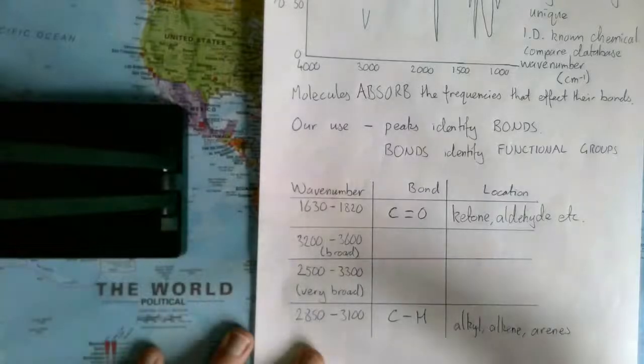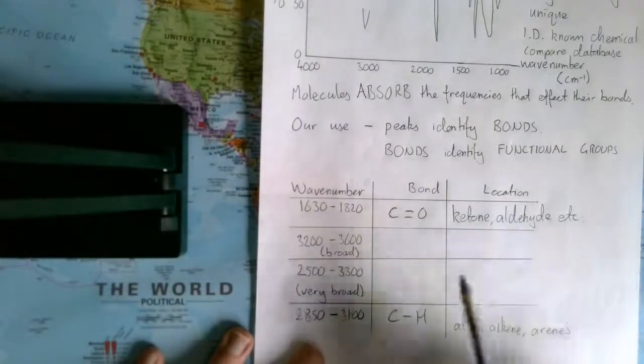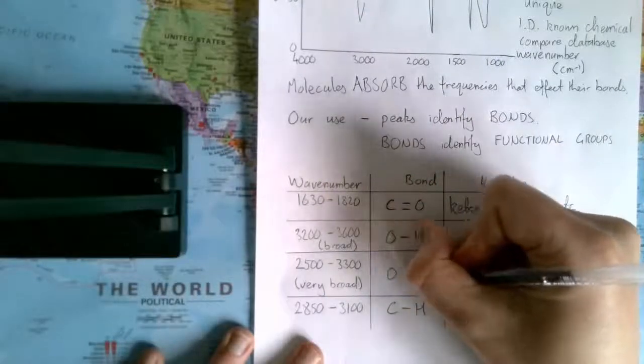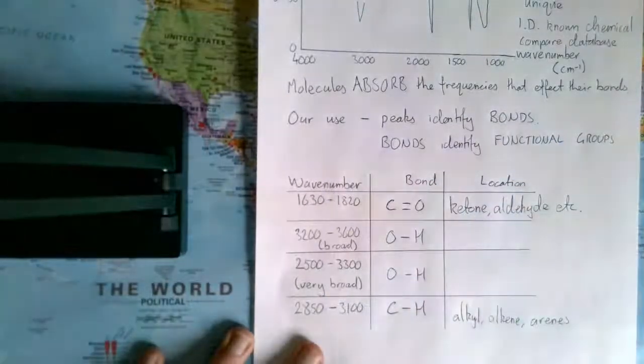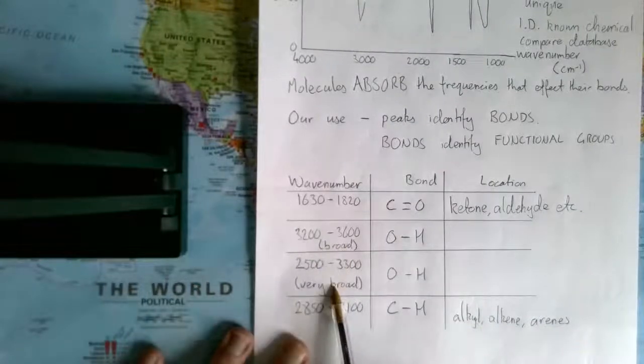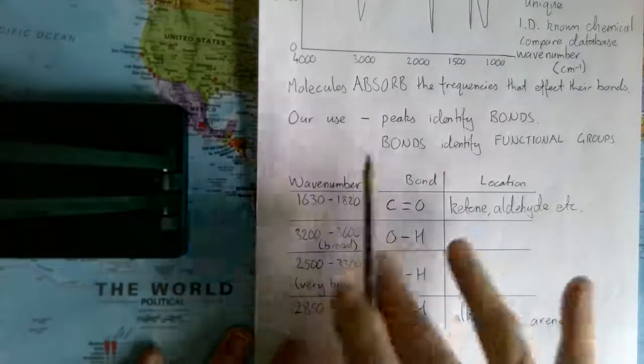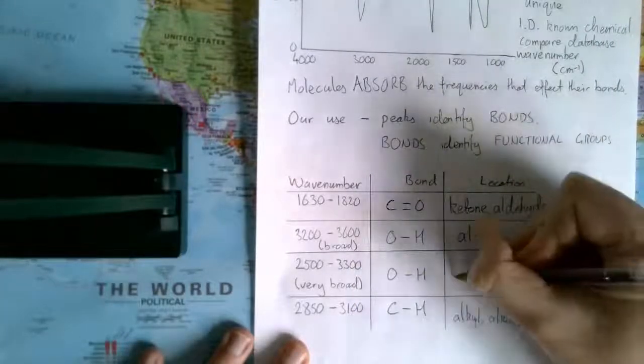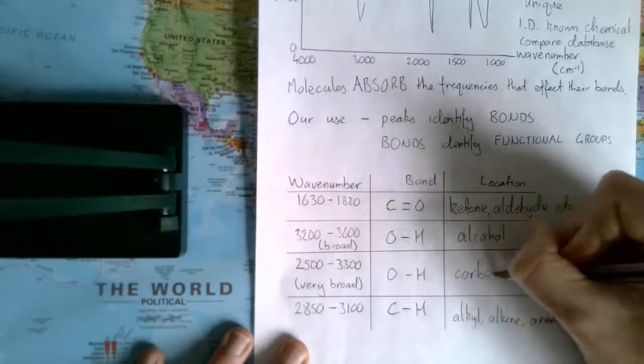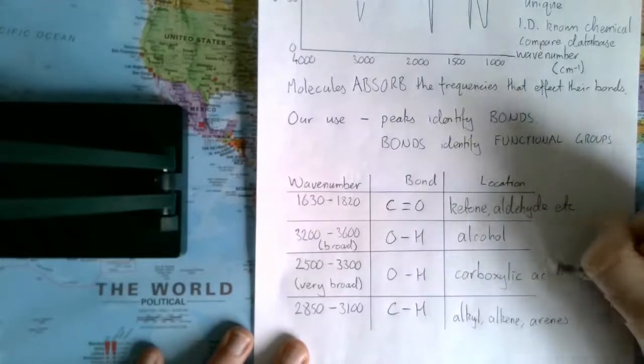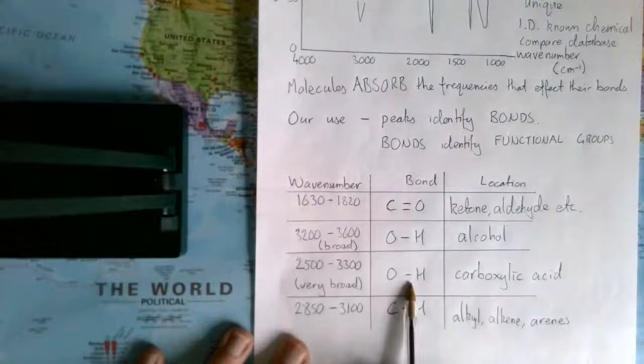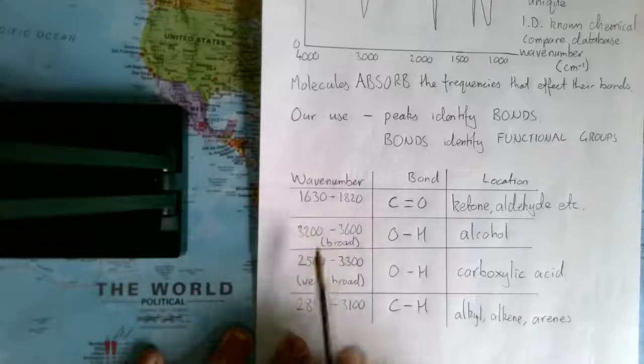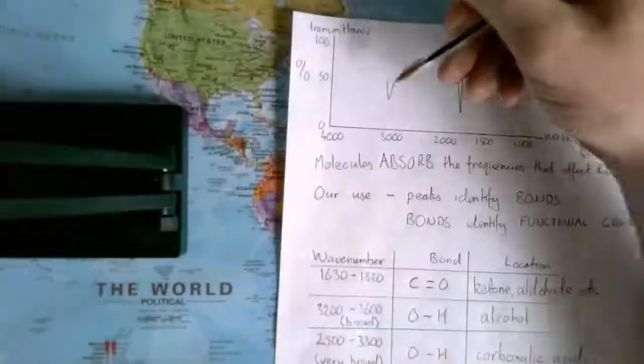There are two main bonds we're looking out for. The first is the carbon double bond to oxygen, and the second is the oxygen to hydrogen. However, it occurs in two different ranges, depending if it's in an alcohol or a carboxylic acid. If we have a carboxylic acid, this O-H is going to produce a very broad and slightly lower in number peak.